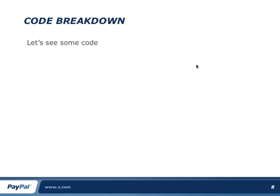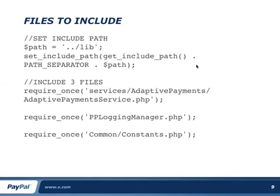Let's do a code breakdown so you can see what these new objects and methods look like. The first thing you'll do is include some files — there are three files you need to include. I've set a path to the lib folder, and inside that lib folder there's a services folder. In this example, we have adaptive payments, so we need to include the adaptive payment service, a logging manager, and our constants.php file, which stores information like what our redirect URL should be.